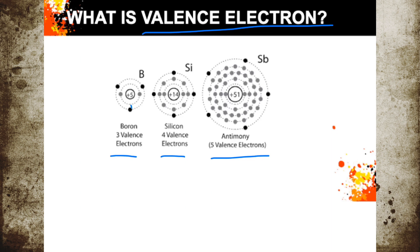For boron, there are one, two, three electrons on the outermost orbit. Therefore, boron has three valence electrons.